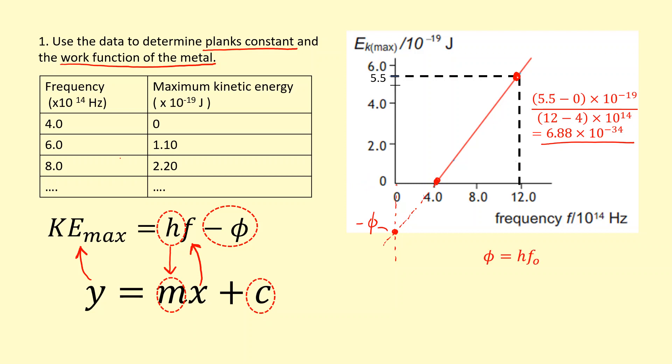So threshold frequency times Planck's constant would give us the work function. So there you go. The work function in this case is 1.72 electron volts.